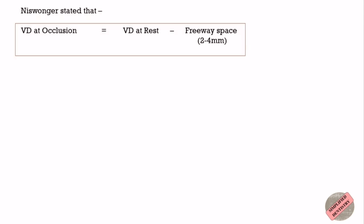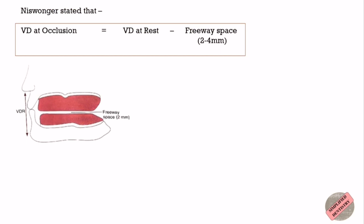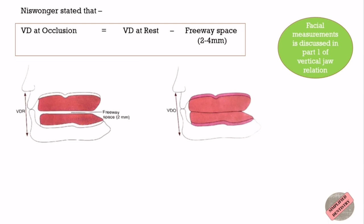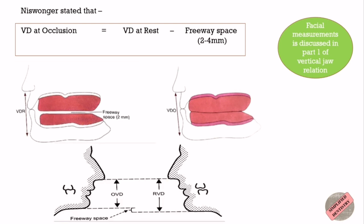The physiologic rest position is first determined. The contoured maxillary occlusal rim is placed in the patient's mouth and the vertical dimension at rest is determined using facial measurements. The mandibular occlusal rim is then inserted, trimmed, and contoured until it meets the maxillary rim evenly. The lower rim is adjusted until the facial measurement in occlusion is 2 to 4 mm less than in rest position, providing the necessary inter-occlusal space or freeway space. This can be verified by asking the patient to part the lips without moving the jaws, with the occlusal rim inserted.